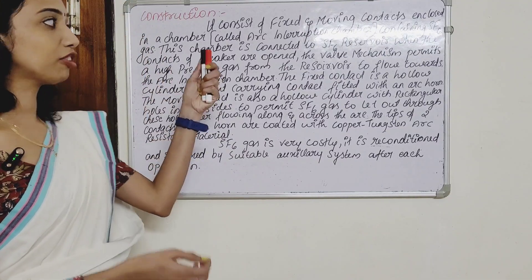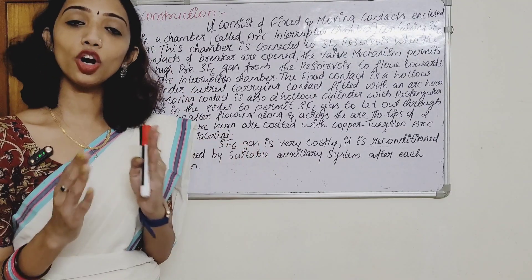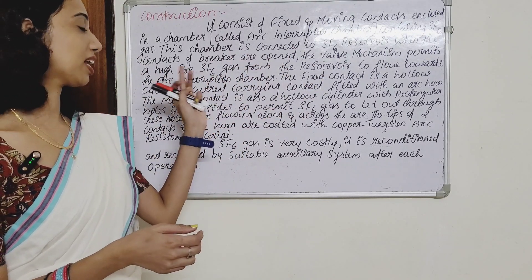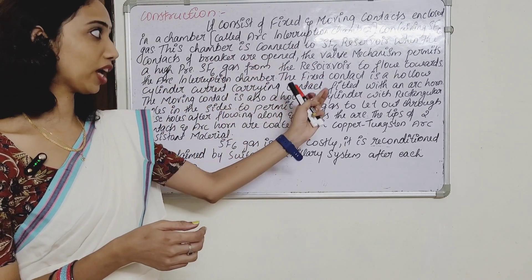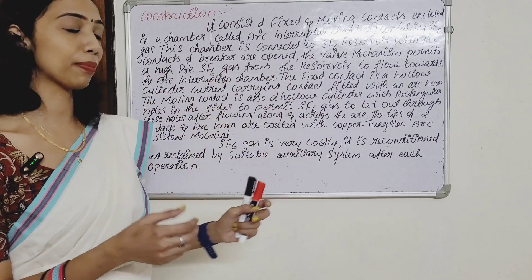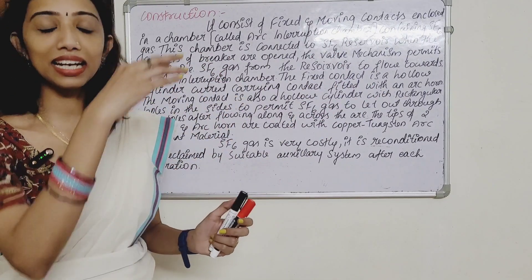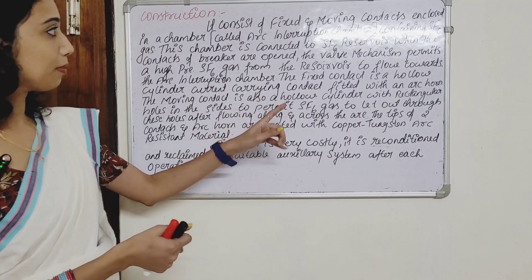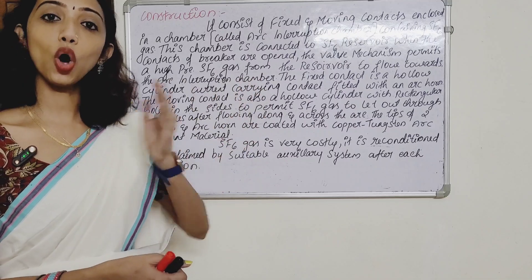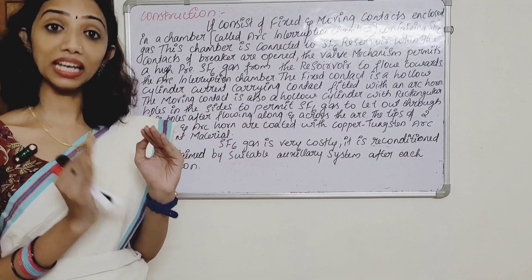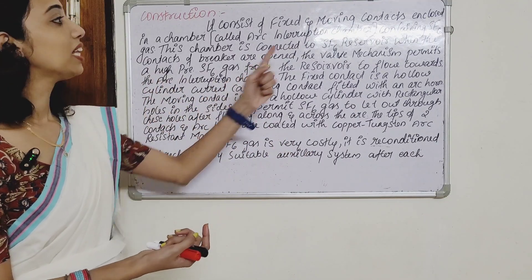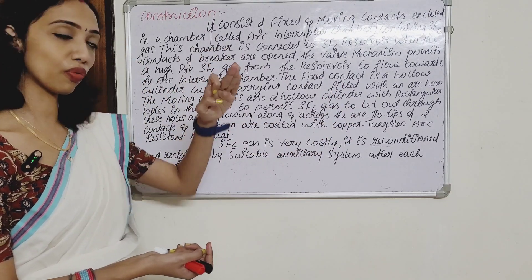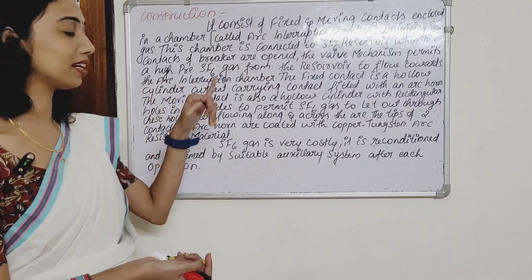When the contacts of the breaker are opened, the valve mechanism permits high-pressure SF6 gas from the reservoir to flow towards the arc interruption chamber.